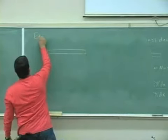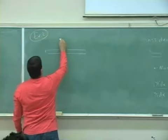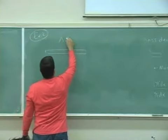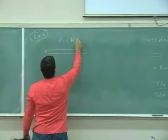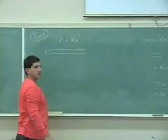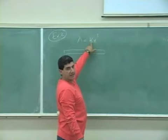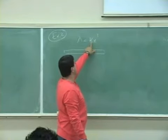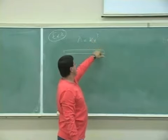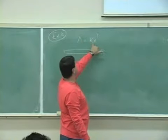So example two, lambda is equal to kappa x cubed. So usually I just pick some kind of constant here. It doesn't matter what the constant is, but what matters is the behavior of the lambda on the x.